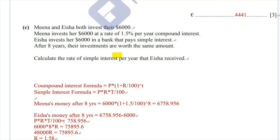Now the simple interest formula is set up correctly. We have the principal amount, we're finding the rate, and we have the time. So: 6,000 × rate × 8 / 100 = 758.956, which gives us 48,000 × rate = 75,895.6. Dividing: R = 75,895.6 / 48,000, giving an answer of 1.58.